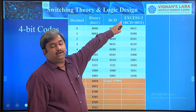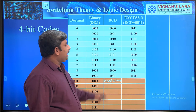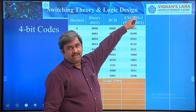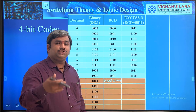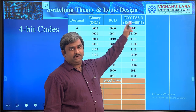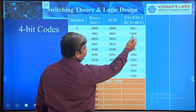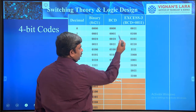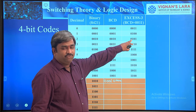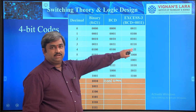XS3 (Excess-3) code is derived by adding 3 (binary 0011) to each BCD value. So BCD + 3 = XS3. The XS3 code starts from 0011 for decimal 0. For example, decimal 2 in BCD is 0010; add 3 to get 5, which is 0101 in binary — so XS3 for decimal 2 is 0101.